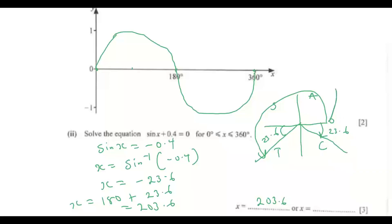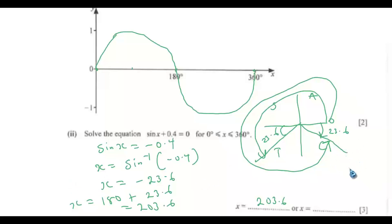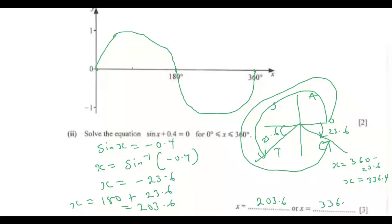The second solution comes from the fourth quadrant, where sin is also negative: x = 360 − 23.6 = 336.4°. So the two solutions are x = 203.6° and x = 336.4°.